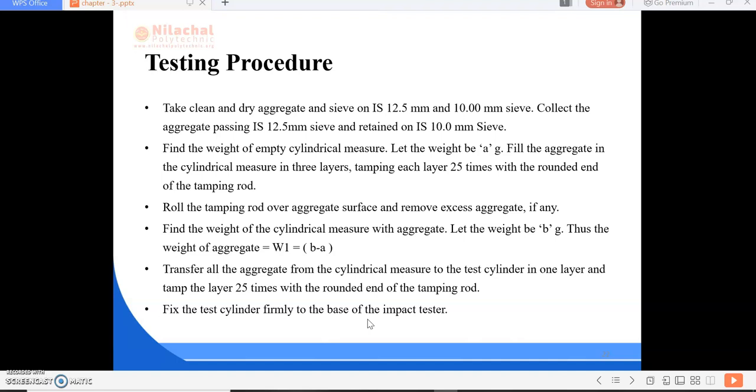Then roll the tamping rod over aggregate surface and remove excess aggregate if any. Then find the weight of the cylindrical measure with aggregate, let the weight be B grams. Thus the weight of aggregate will be calculated by W1 equals B minus A. From this formula we can get the weight of aggregate. Then transfer all the aggregate from the cylindrical measure to the test cylinder in one layer and tamp the layer 25 times with the rounded end of the tamping rod.